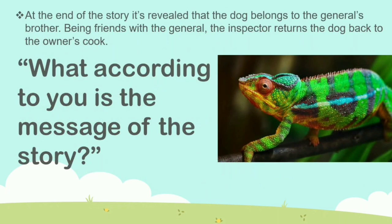At the end of the story, it is revealed that the dog actually belongs to the general's brother. Being friends with the general, the inspector returns the dog to the owner's cook, and that is how the story comes to an end.